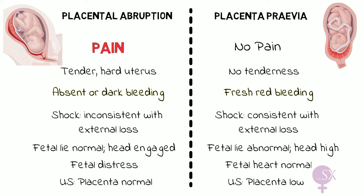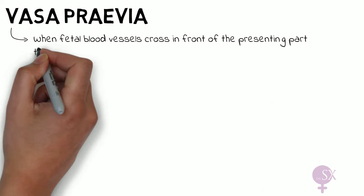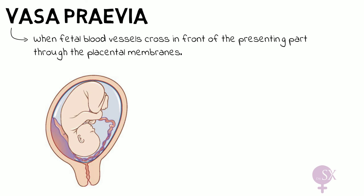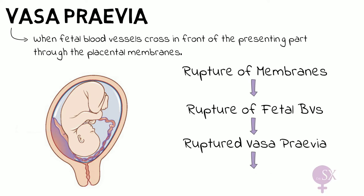Moving on to the other causes of APH — vasa previa is a rare condition that occurs when fetal blood vessels cross in front of the presenting part through the fetal membranes. When the membranes rupture, the fetal blood vessels within the membranes also rupture; this is called ruptured vasa previa. Because we are dealing with the direct blood supply going to the baby, ruptured vasa previa is usually accompanied by severe fetal distress.